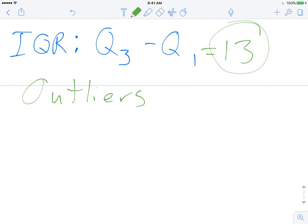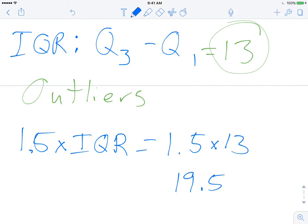All right, so all that said, outliers. First, the way you determine if there are outliers in your data is you take 1.5 times your interquartile range. And so first we're going to do that. So if I take 1.5 times 13, so that's going to be 13 plus half of 13 is 6 and a half, so that's going to be 19.5.